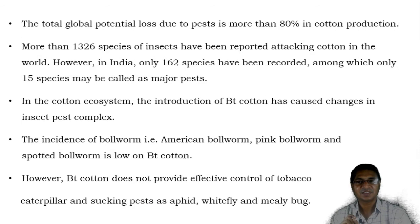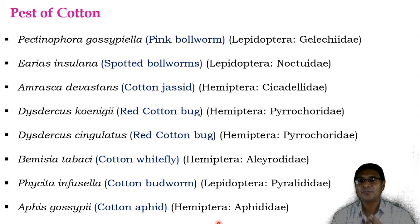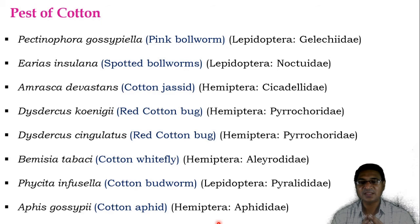The certain pests of cotton are: pink bollworm, spotted bollworm, cotton jassid, red cotton bug (Dysdercus koenigii), red cotton bug (Dysdercus cingulatus), cotton whitefly, cotton budworm and the cotton aphid.